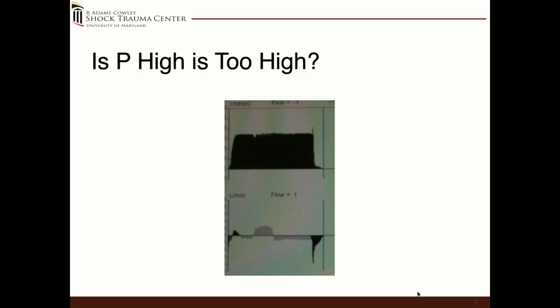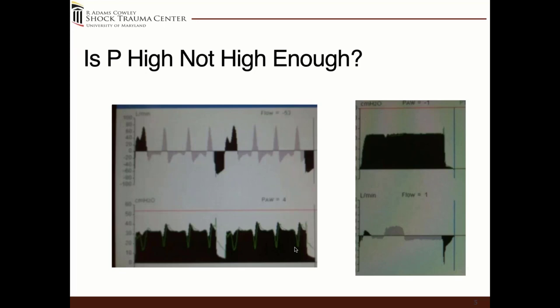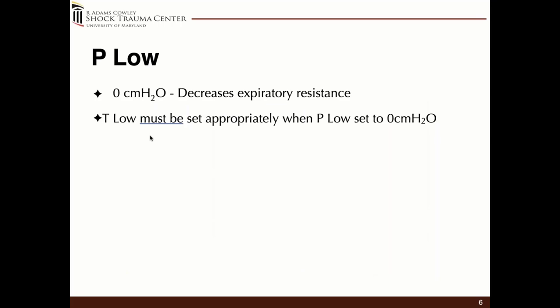One question is whether the P high is too high. The patient can take a spontaneous breath during the CPAP phase on the P high, but you can see a sustained expiratory phase — the patient is pushing against the P high. The spontaneous breath is very narrow and tall, meaning the patient has a lot of effort but can't sustain and hold that breath. The machine is delivering about 40 liters, but the patient is pulling nearly 80 liters. When the patient outflows the machine that much, the P high may not be high enough.